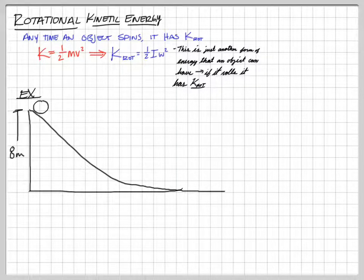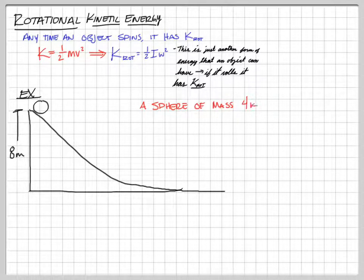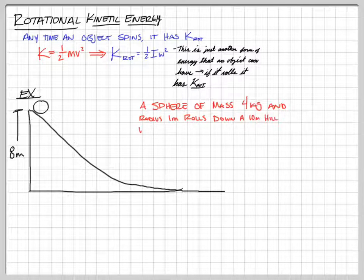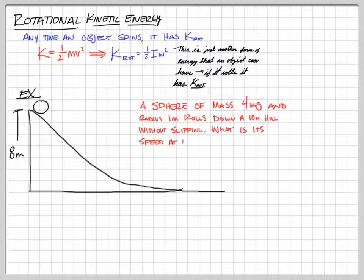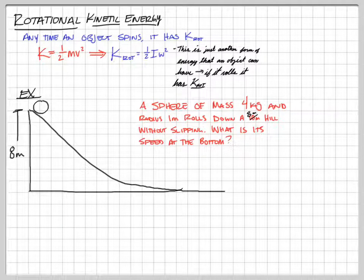We have a ramp that's eight meters tall. We're going to put a sphere on that ramp — a sphere of mass four kilograms and radius one meter. It rolls down an eight-meter hill without slipping. What is its speed at the bottom?